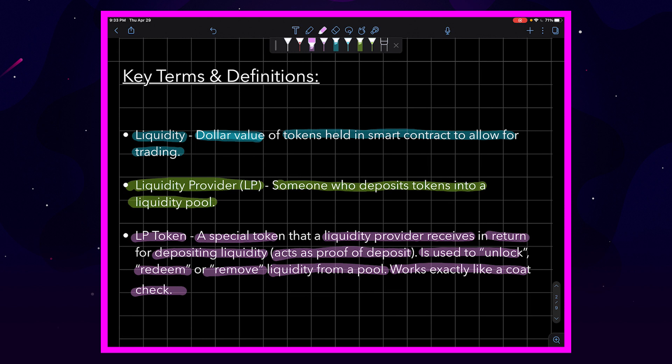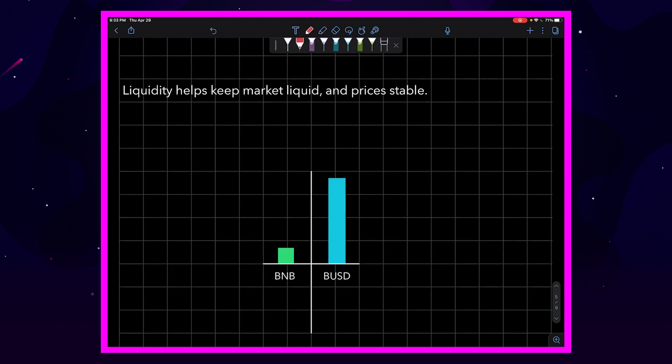All right, so let's jump into an example here. Liquidity helps keep the market liquid and prices stable. Let's see how that happens. Now we'll set up this one just like every other example. We'll say BNB equals $500 and we'll put $10,000 worth of liquidity into our pool.